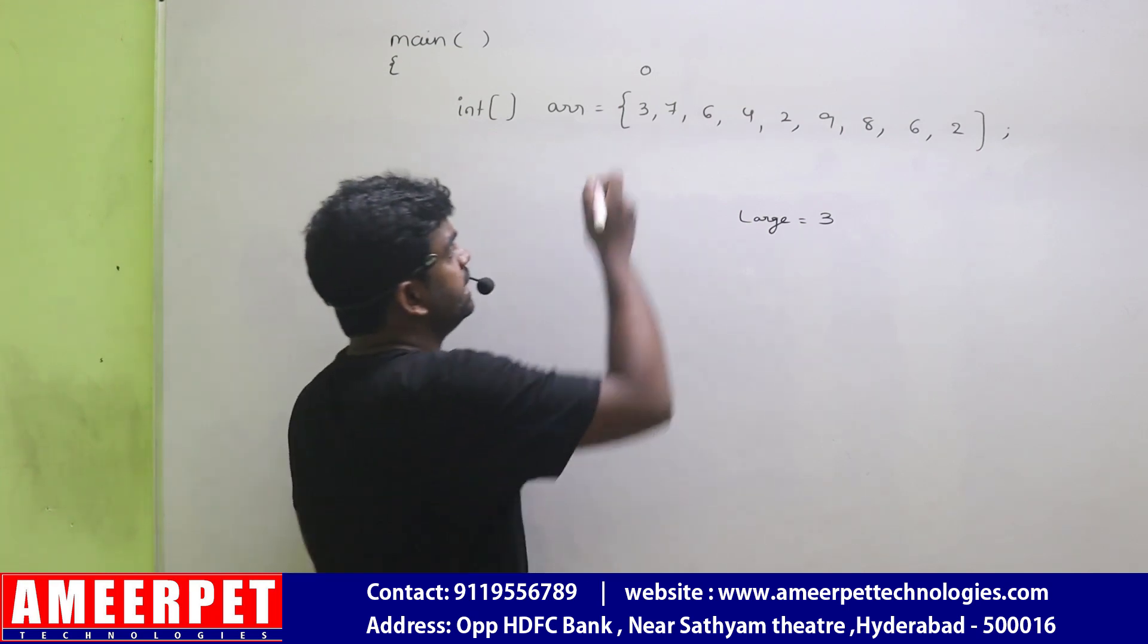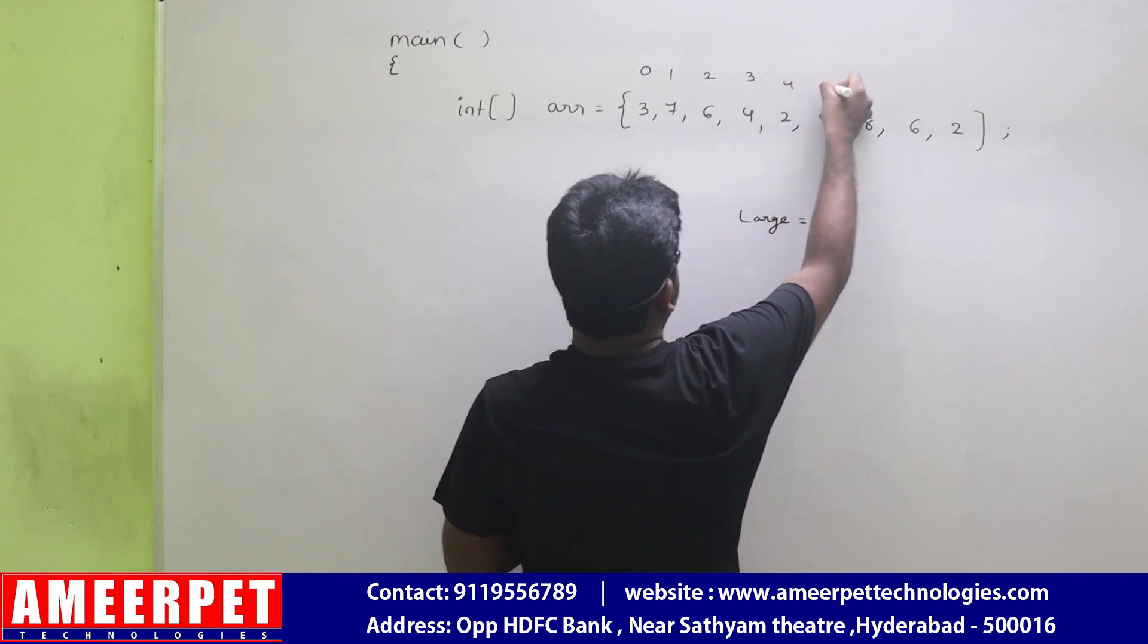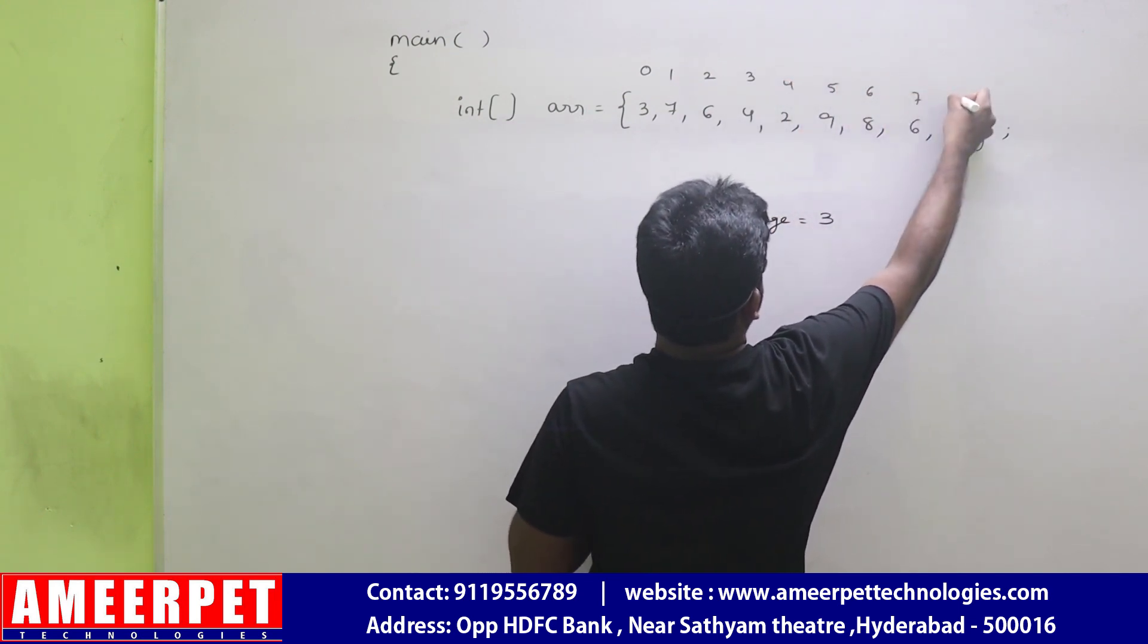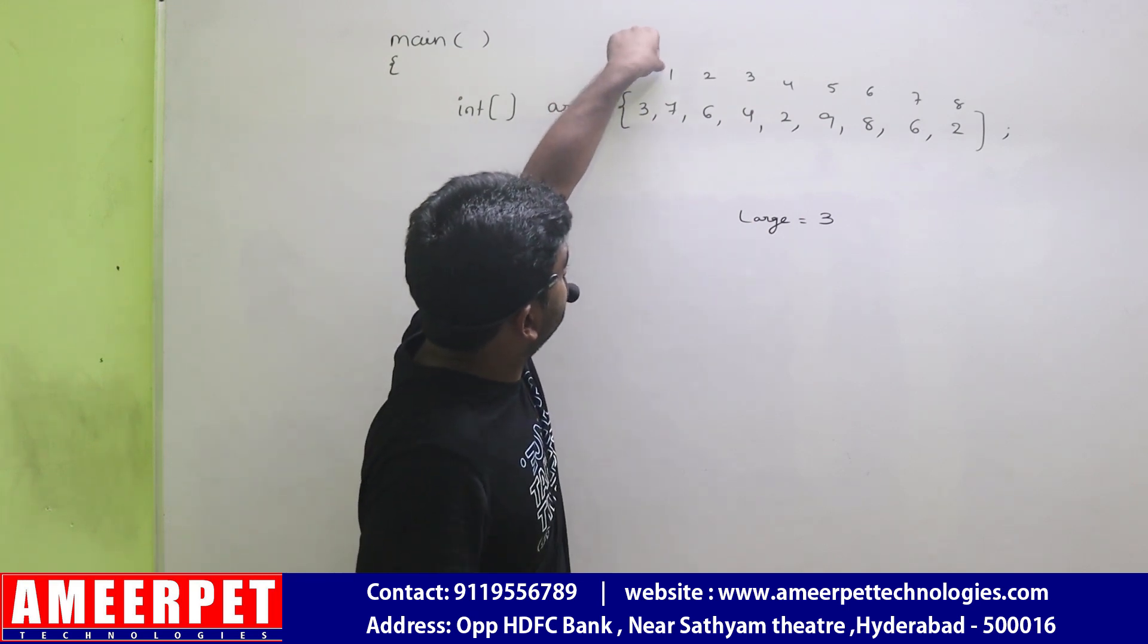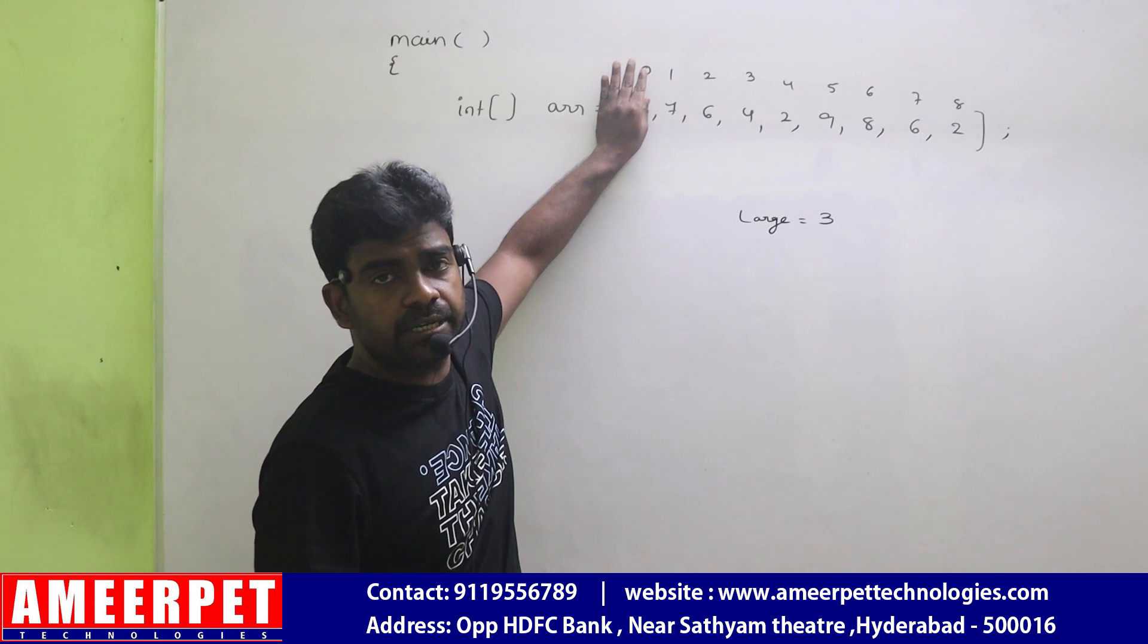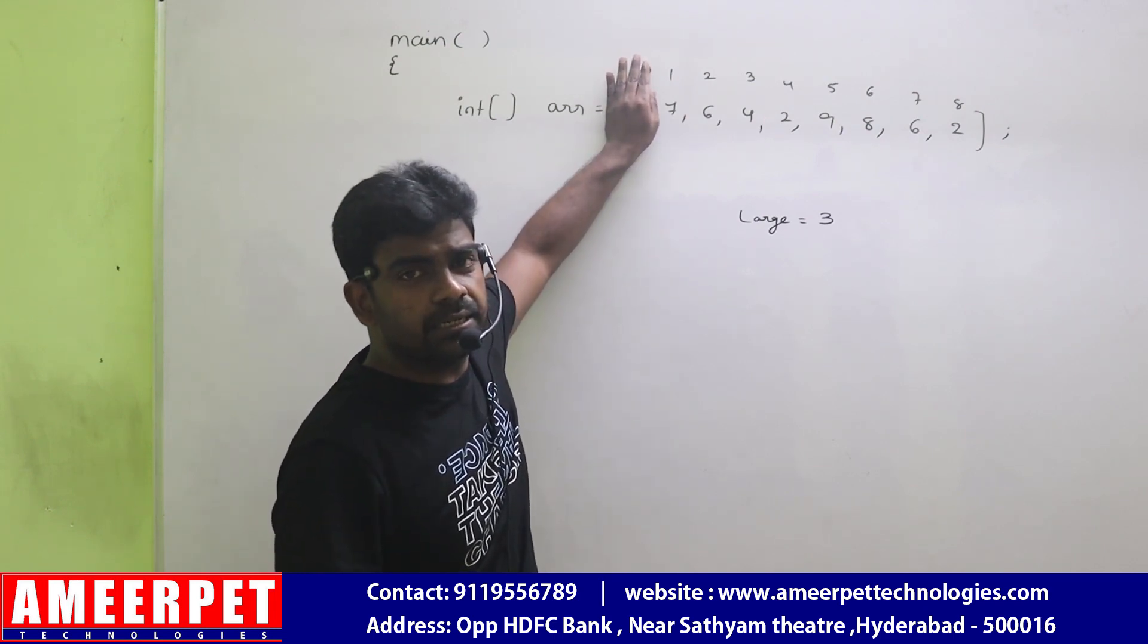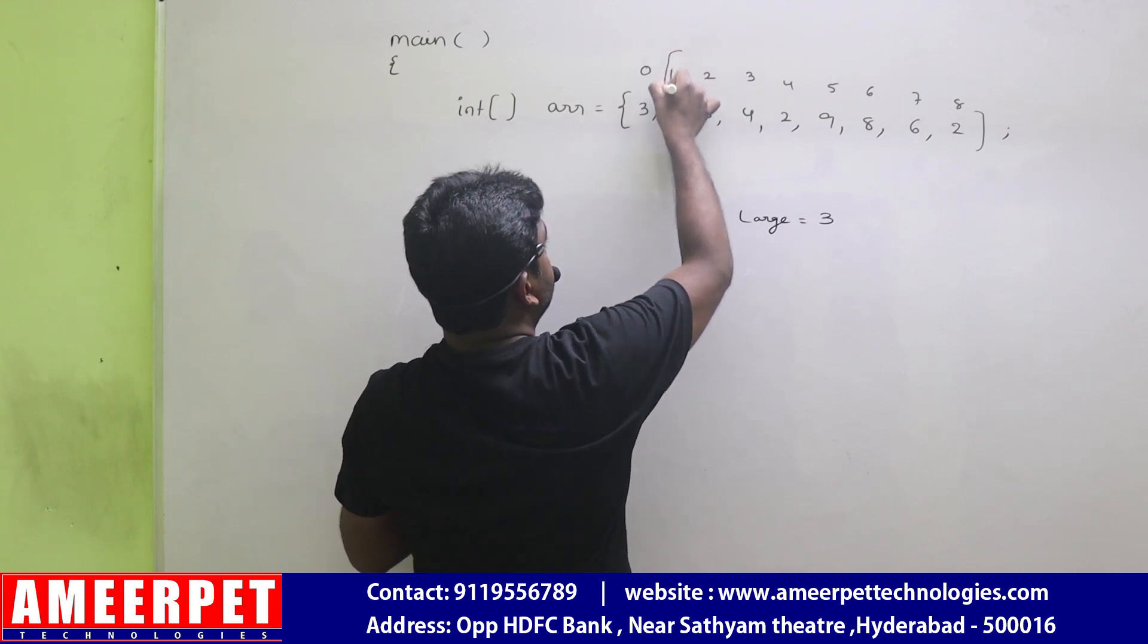Then we need to compare with remaining elements. We need to compare remaining elements in the array. So we are repeating the loop from 1st location. No need to repeat the loop from 0th location because we already considered it. So that's time waste. We need to start counting from here.